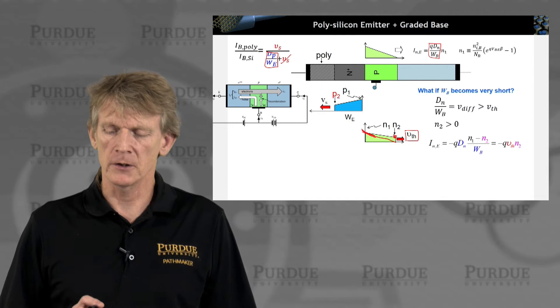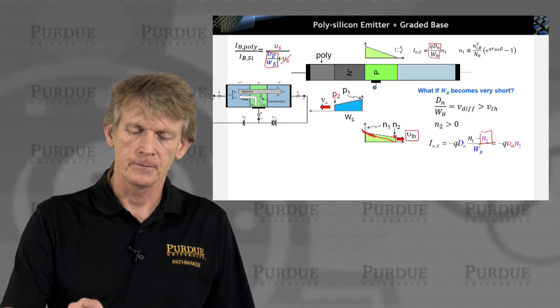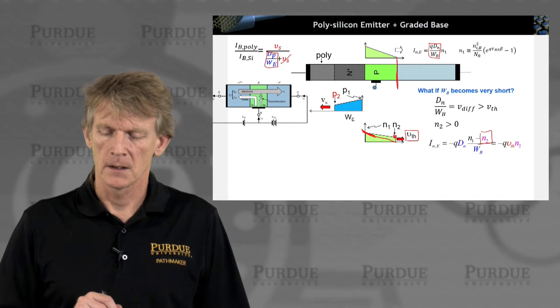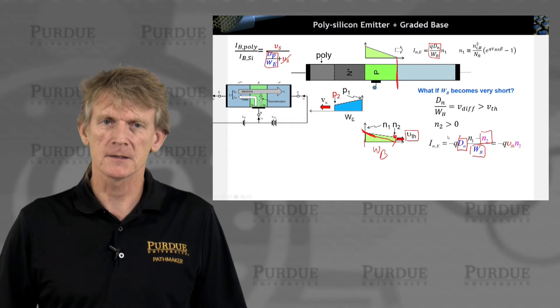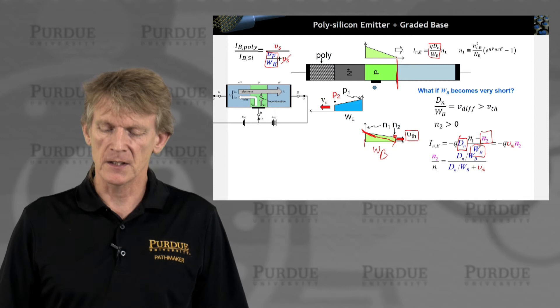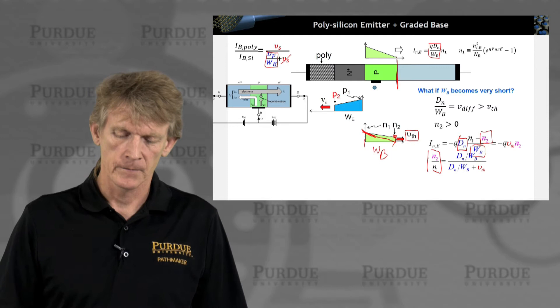So you write down an expression for the emitter current that now includes a finite value now at the end of the base junction, like this, for the electrons. And you include the base width, which is here, right? Wb. And you have the diffusion coefficient, dn. Same thing as what we just did in the previous section.